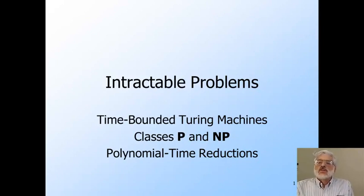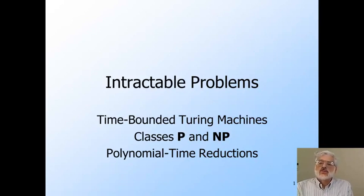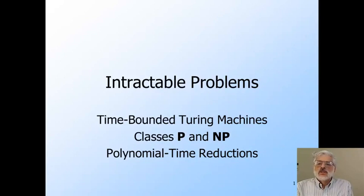If a problem does take time that is exponential in its input size, then it can in practice only be solved for small instances. If the time to solve an instance of size n is 2^n, doubling machine speed makes essentially no difference — it adds one to the size n you can solve. Using a thousand machines instead of one adds ten to n, and using a million machines each a thousand times faster adds 30 to n. You never get to really big problem instance sizes.